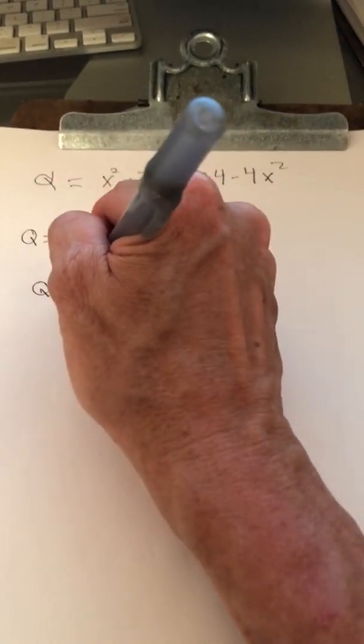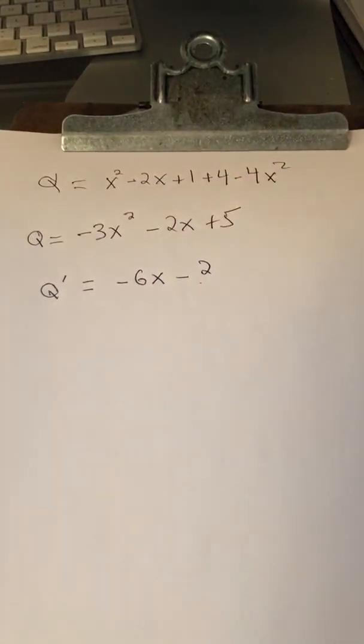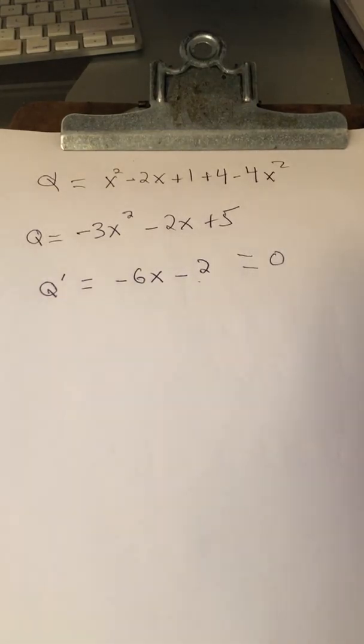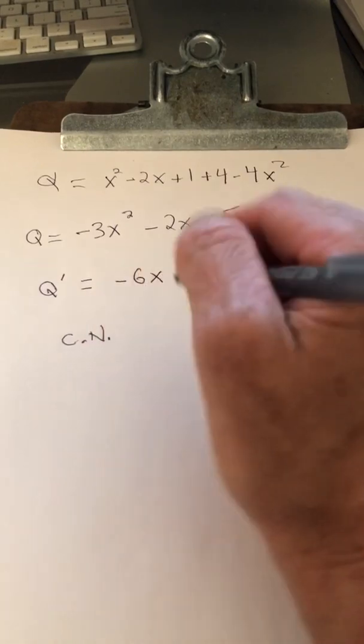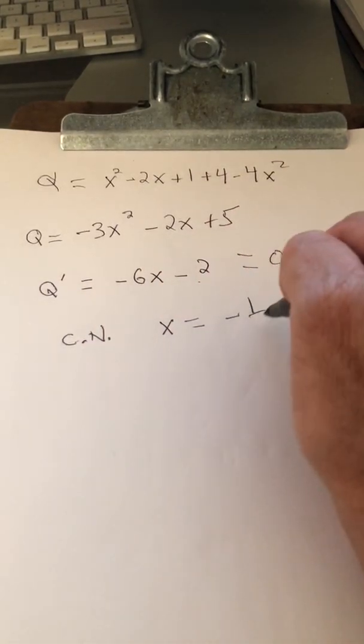So, Q prime is negative 6x minus 2. Find the critical numbers. Only one critical number. x equals negative 1/3.